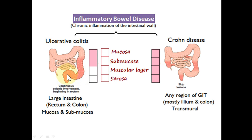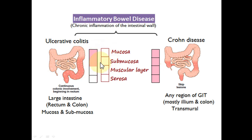In ulcerative colitis, the common site is the rectum and sigmoid colon. It starts at the rectum and without any break, continually extends through the large intestine and can involve it up to the ileocecal junction. Ulcerative colitis involves only the large intestine, and only the mucosal and submucosal layers are damaged and inflamed.